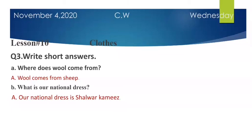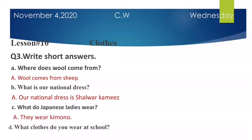C is what do Japanese ladies wear? Answer is they wear kimono. D is what clothes do you wear at school? Answer is we wear school uniform at school.